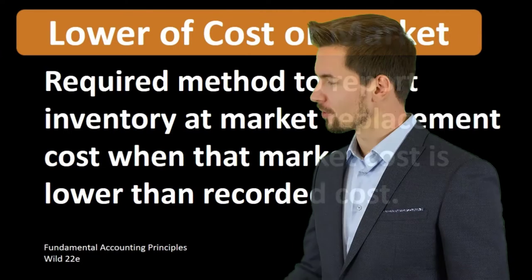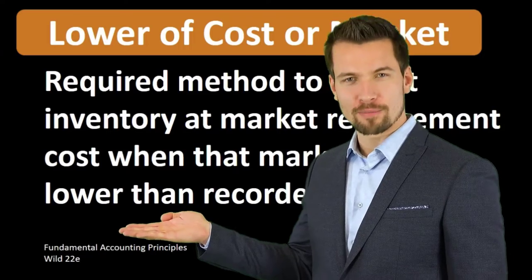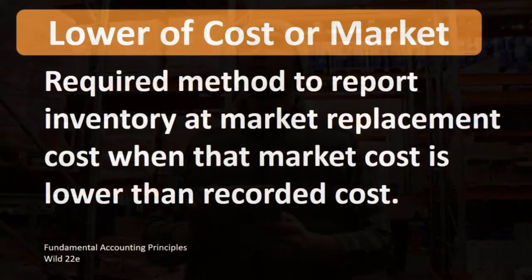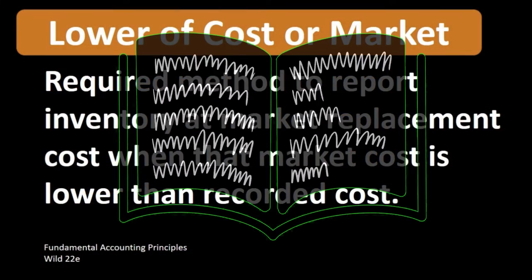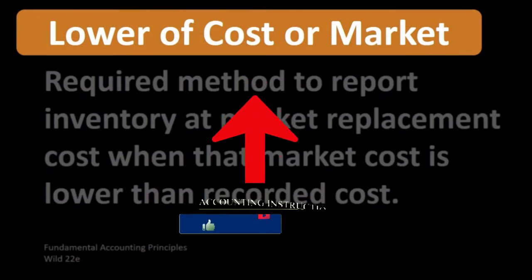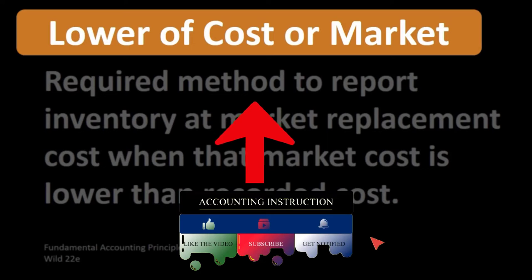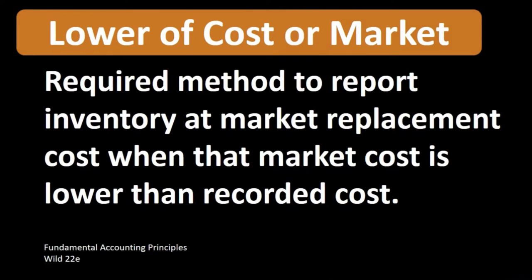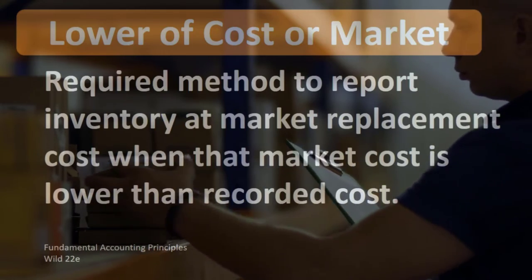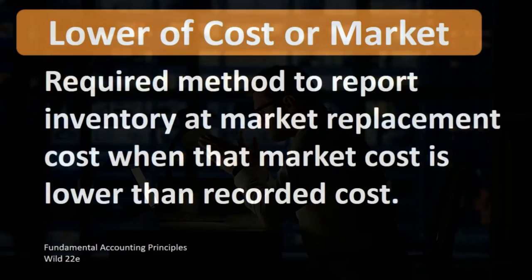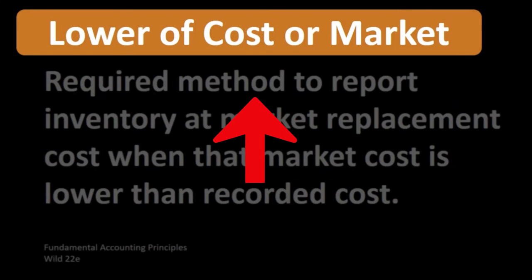This is basically a conservative assumption. We look at the inventory and see how much it was purchased at — that's what we're usually keeping it on the books for. However, if it's gone down in value and we believe the replacement cost is less than the cost we purchased it for, we should take the lower of the two. This would make the asset of inventory lower, which is why it's part of the conservative assumption principle.